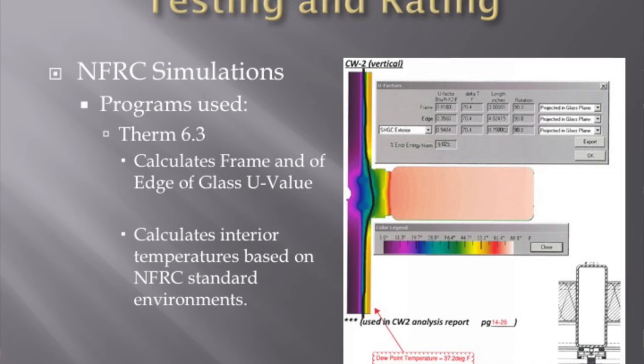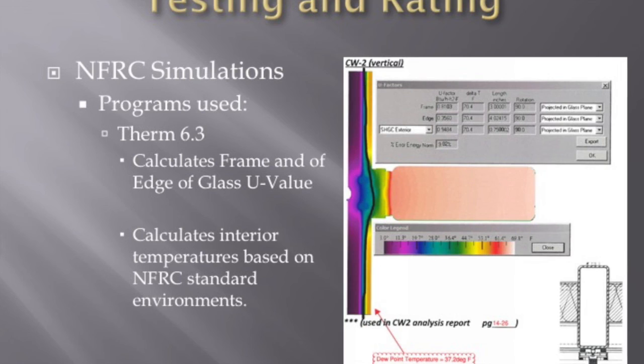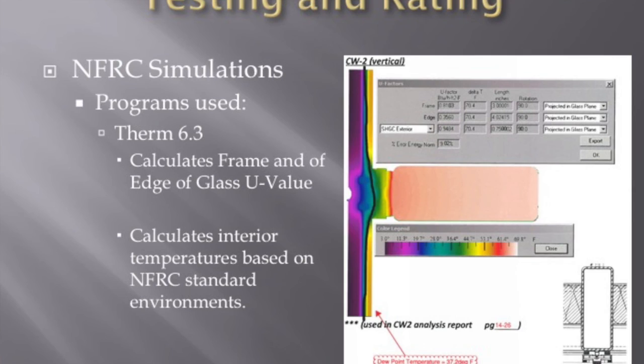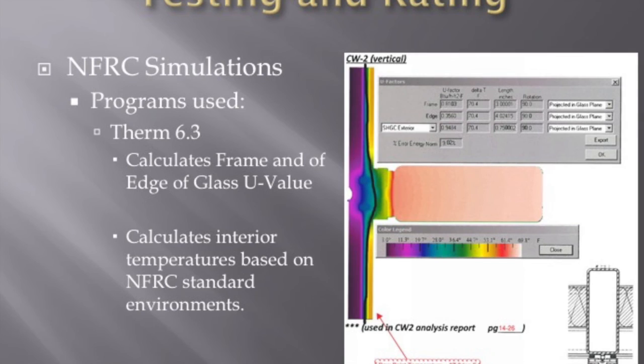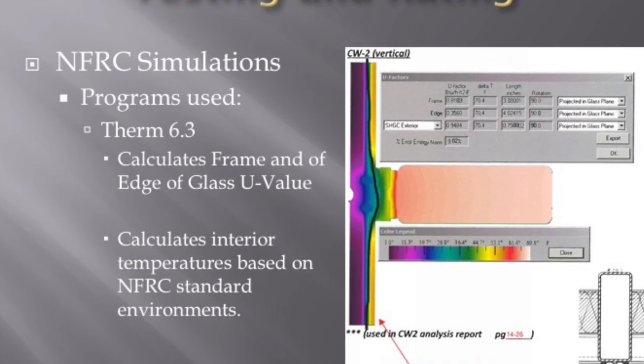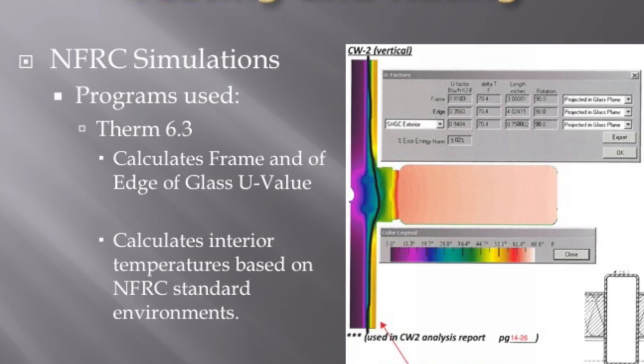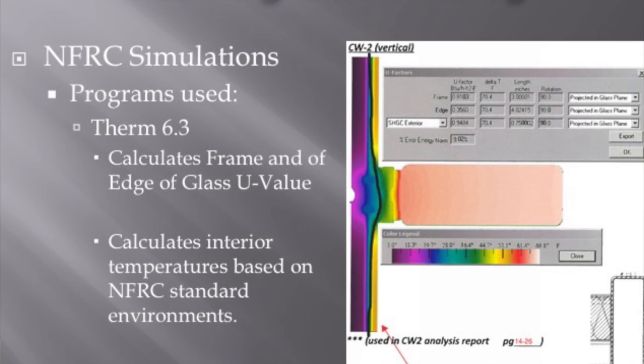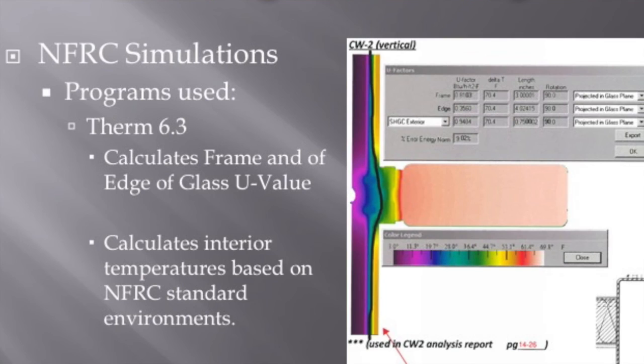Therm 2.3 calculates edge-of-glass and frame thermal properties. You take all the important cross-sections from your curtain wall system, plug each one into the program, and it calculates the U-factor for each section along with an interior temperature based on your interior and exterior environment conditions. Therm is a 2D heat analysis program — that's essentially all it can do, but it's very effective for that purpose.